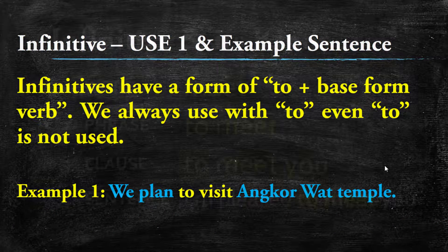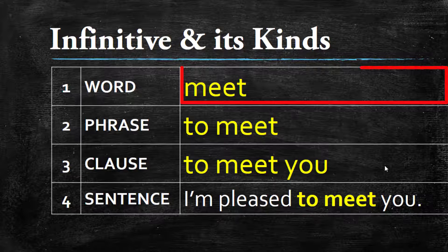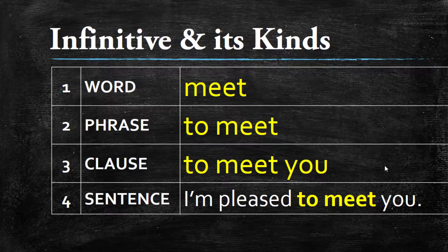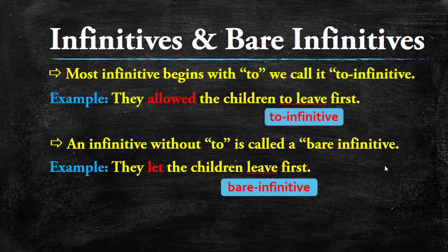For a deeper explanation: when we think about infinitives, we consider them as a word, a phrase, or part of a sentence. There are two kinds of infinitives: the to-infinitive and the bare infinitive. Most infinitives begin with 'to' — these are called to-infinitives. Example: 'They allow the children to leave first,' where 'to leave first' is the to-infinitive. A bare infinitive is without 'to.' Example: 'They let the children leave first,' where 'leave' is the bare infinitive because 'to' is not used.